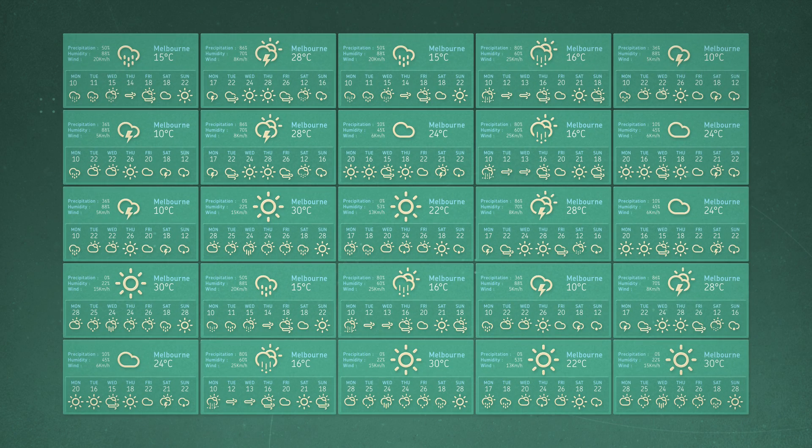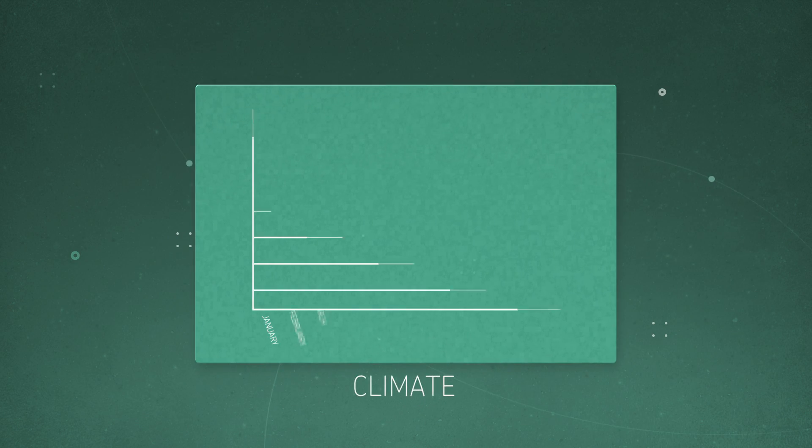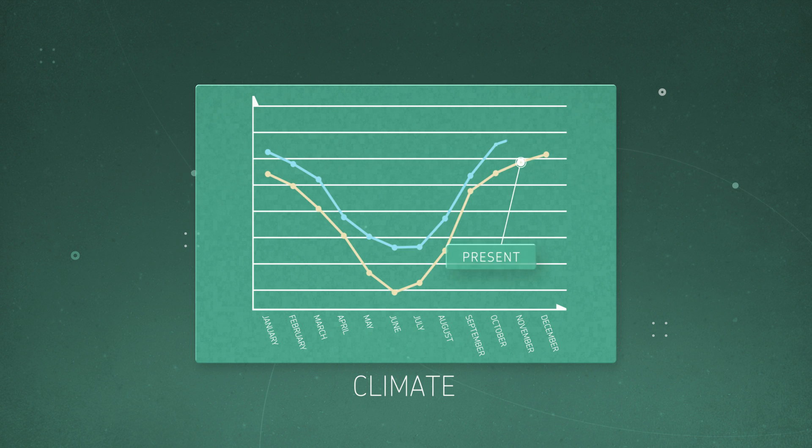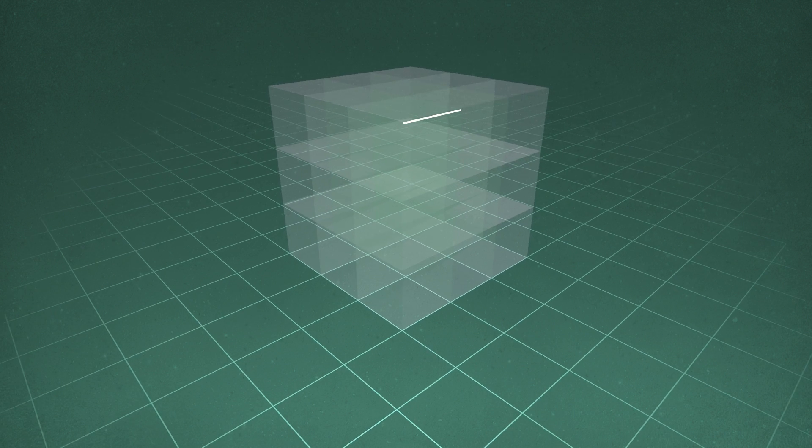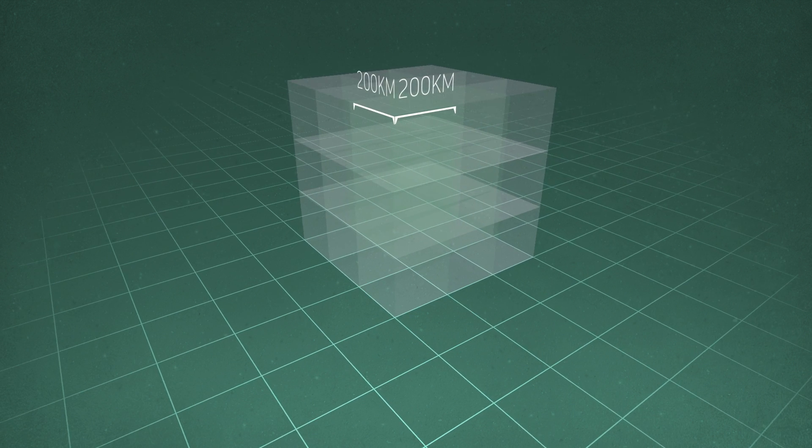Looking decades ahead, the model enables climate scientists to estimate ranges of temperature and rainfall. The model works by dividing the earth into boxes. Typically, the boxes measure about 200 kilometres by 200 kilometres.